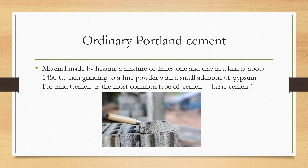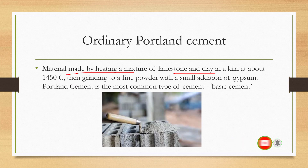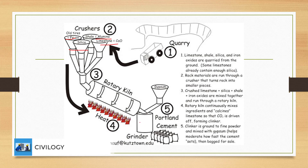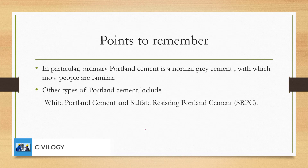Ordinary Portland Cement is a material made by heating a mixture of limestone and clay in a kiln at about 1450 degrees Celsius, then grinding to a fine powder with a small addition of gypsum. It is the most common type of cement and is known as basic cement. In this picture you can see iron, silica, alumina, and limestone are added and mixed in the rotary kiln, then gypsum is added, and both are ground properly to form Portland cement.